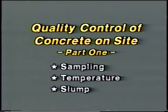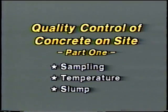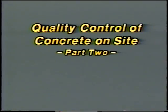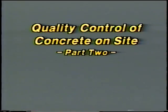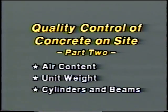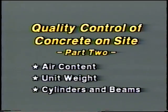And that covers sampling, temperature, and slump — the end of part one. In part two we'll cover air content, unit weight, and the making of cylinders and beams.